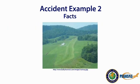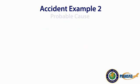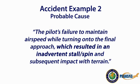This is a picture taken from the final approach course, and the terrain is varying, meaning the pilot would need to modify the approach path. The NTSB found the probable cause to be the pilot's failure to maintain airspeed while turning onto the final approach, which resulted in an inadvertent stall-spin and subsequent impact with terrain.